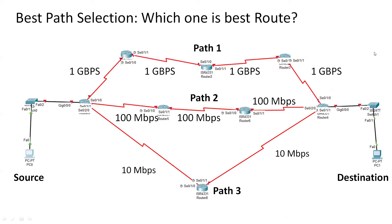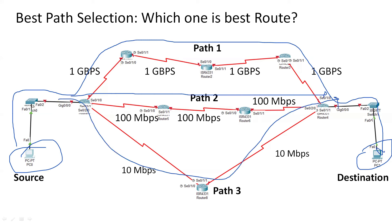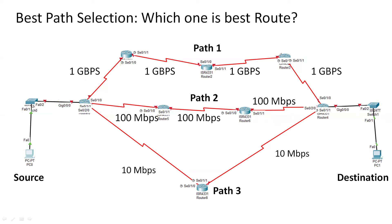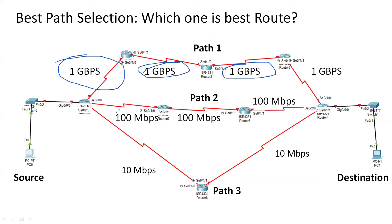If I talk about best path selection mechanisms, there is a diagram showing a local area network over which we need to forward data. This is the source PC and this is the destination PC, and there are three different paths. Path one has a bandwidth of 1 Gbps between each and every node. Path two has a speed of 100 Mbps and only two nodes are available on this path.